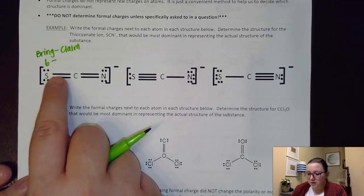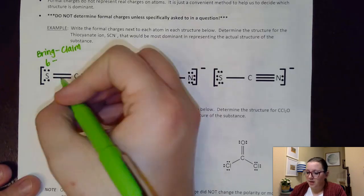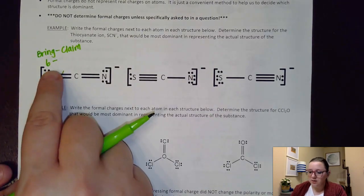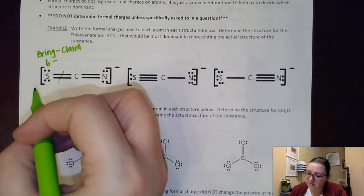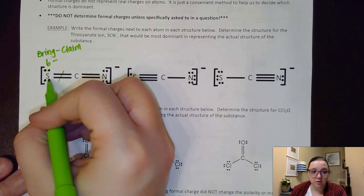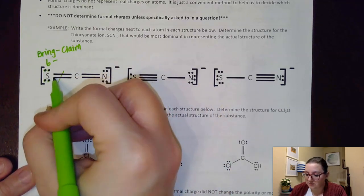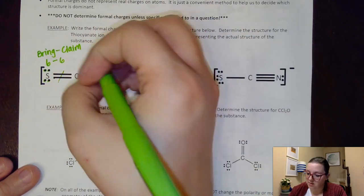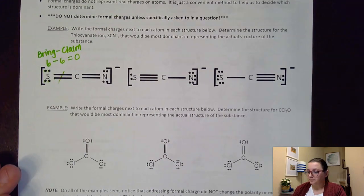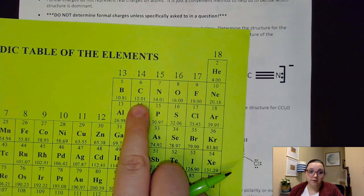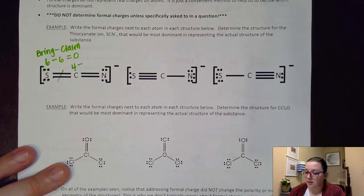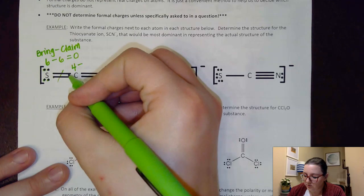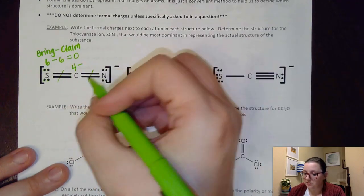The double bond gets split, so two electrons are claimed by the sulfur and two by the carbon. That means sulfur claims its four unshared electrons plus two from the bond — so six total. Six minus six gives a formal charge of zero. For carbon, group 14 brings four valence electrons. It has no unshared electrons, but claims half of each bond — one, two, three, four. Four minus four is zero.